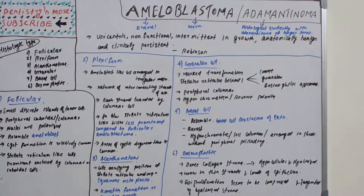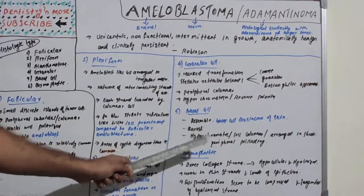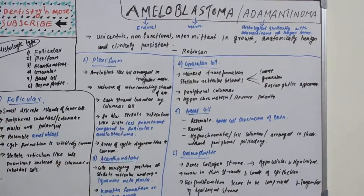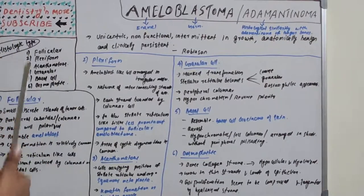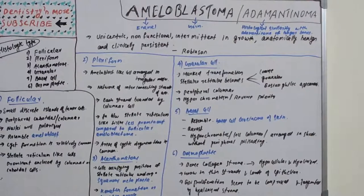Basal cell type: so named because it resembles basal cell carcinoma (BCC) of the skin. It is the rarest histological form of ameloblastoma. Hyperchromatic, less columnar cells are arranged in sheets without peripheral palisading.